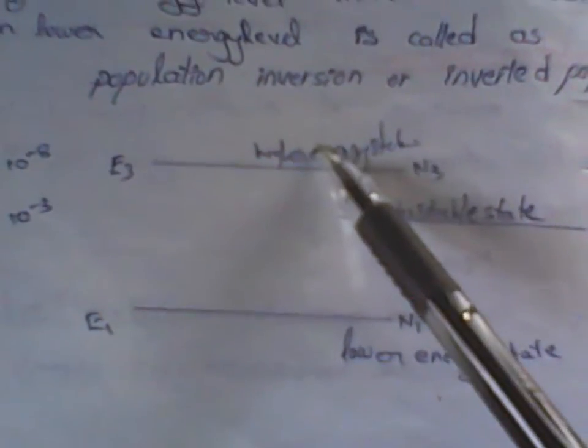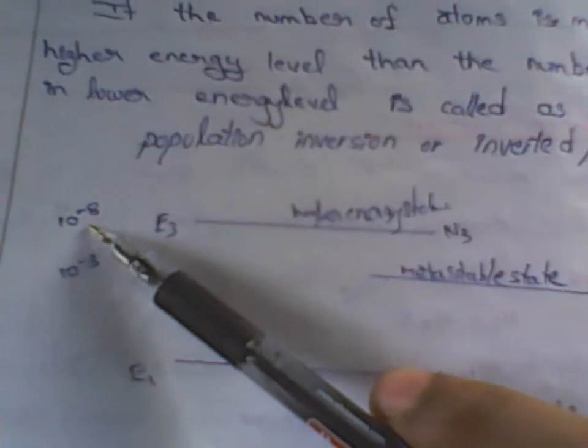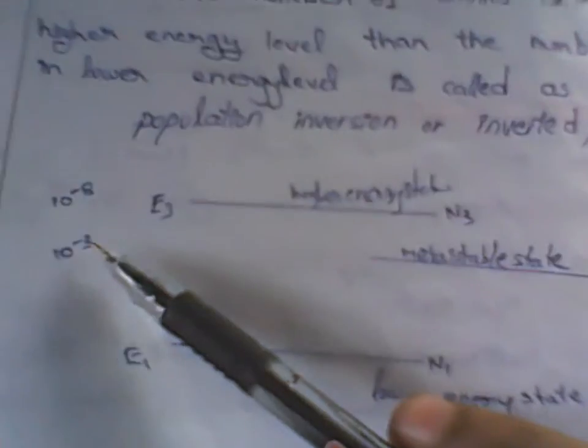Here I want to introduce a new term known as metastable state. Between lower energy state and higher energy state, in the higher energy state electrons will last for 10^-8 seconds. But in metastable state, the time increases to 10^-3 seconds.